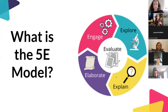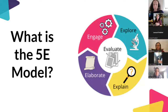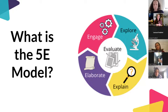The 5E instructional model has five E's: engage, explore, explain, elaborate, and evaluate. I use a circular model with four E's around the outside and evaluation in the middle. The idea is that where you enter doesn't necessarily matter, but everything evolves around evaluation. The old linear model starts at engage and always ends in evaluation, which leads us to think we must do engagement, then exploration, then explanation, then elaboration, and finally end in evaluation.